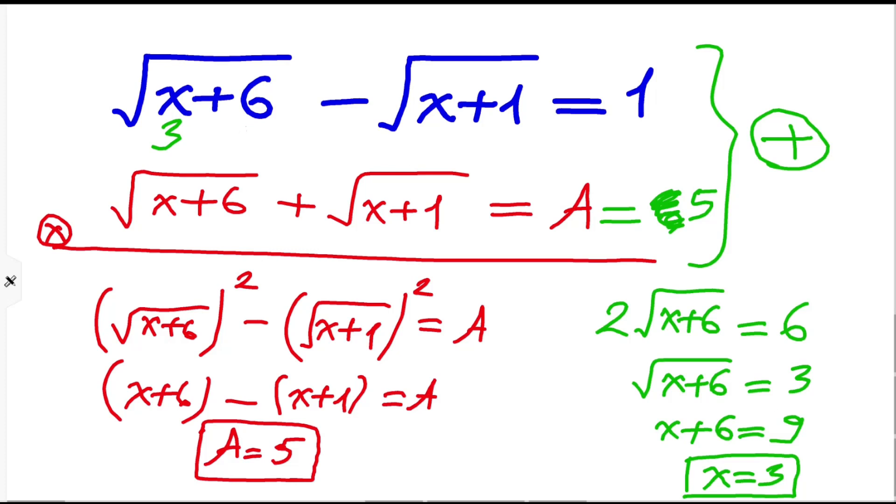To check, we can write here: three plus six is nine, three plus one is four. Square root of nine is three, and square root of four is two. And three minus two is equal to one, so that's right. Thank you for watching, see you in the next video.